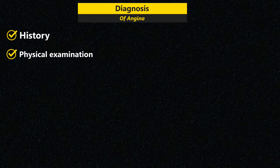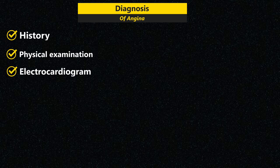Tests used to diagnose and confirm angina include the electrocardiogram, also called ECG or EKG. It is a quick and painless test that measures the electrical activity of the heart. Sticky patches are placed on the chest and sometimes the arms and legs, and wires connect the electrodes to a computer which displays the results. An ECG can show if the heart is beating too fast, too slow, or not at all.